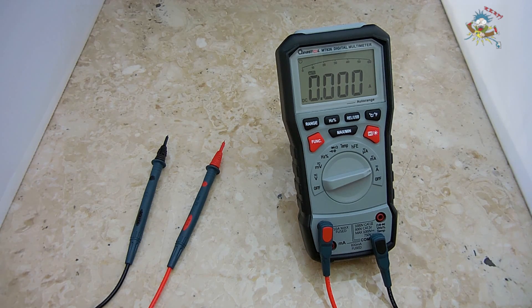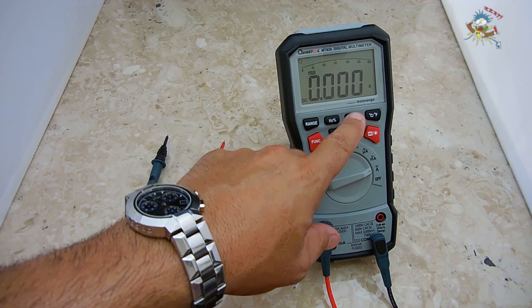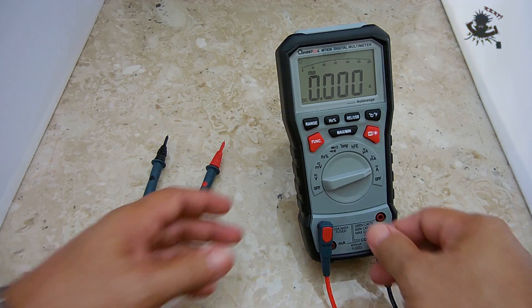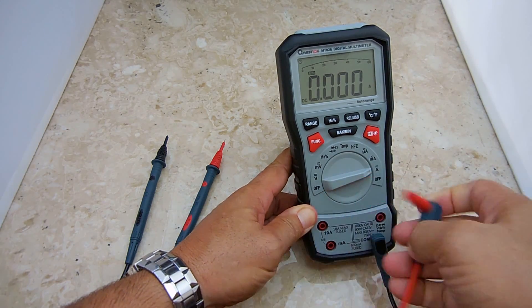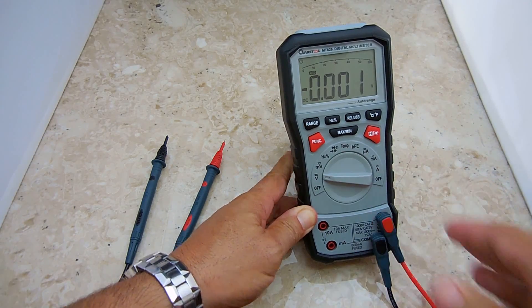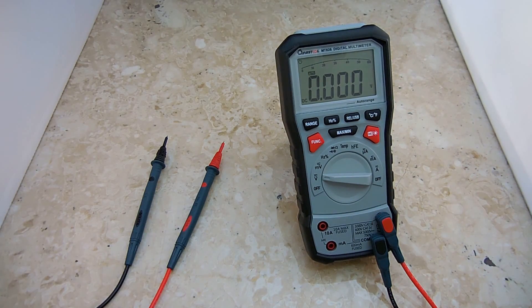Now this meter also has another feature, which is called relative value measurement. You're going to press the button right here. That's going to let you switch between normal measurements and relative value. Relative value measurement does not work with frequency, duty ratio, diode, temperature, or transistor measurements. It's primarily designed for voltage, capacitance, and resistance.